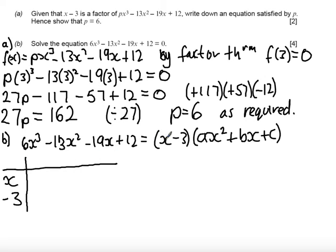So the first term I'm going to get is I'm going to do x times Ax squared. That's going to give me 6x cubed, and that would go in my table here. So in order to get 6x cubed, I would need to multiply x by 6x squared.